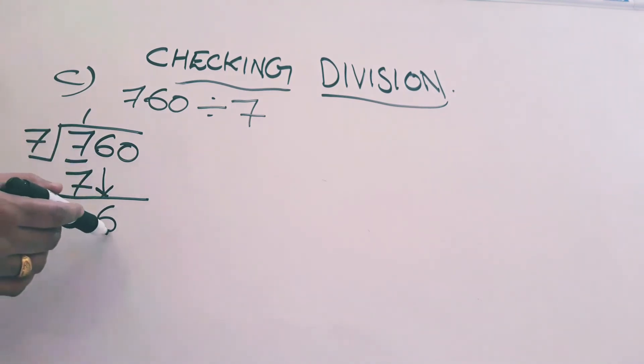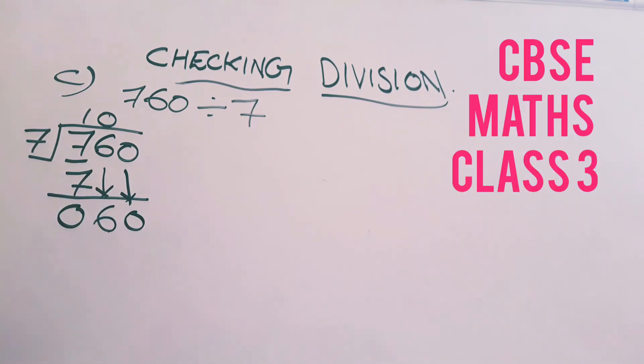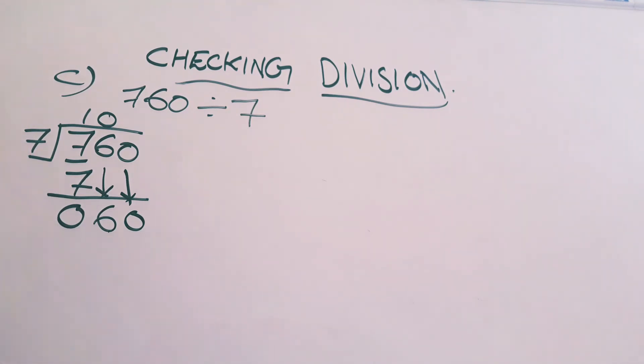Bring down 6. Same rule. When we bring down a number less than the divisor, put a 0 in quotient's place. Now next number also we should bring down here only. The number is 60 now. In 7th table, 60 is not there. 56 is there. 7 eights are 56. Write 8 on the top of this 0. Multiply. 7 into 8 is 56.